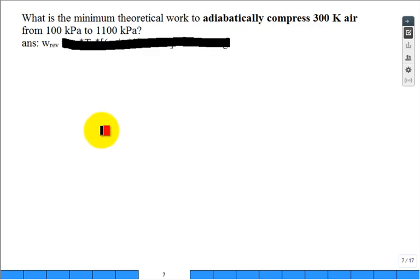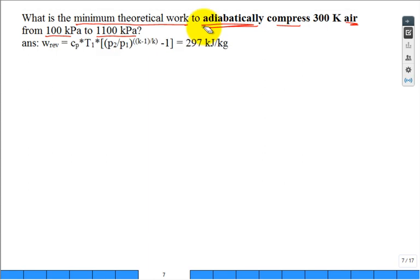Then we shifted and said don't pump water, compress air. Pumps are for water, compressors are for gases. Here we're going to compress air with the same pressure change, going from 100 to 1100 kilopascal. It's the minimum theoretical work required and we're going to adiabatically compress it. The number was about 297 kilojoules per kilogram.